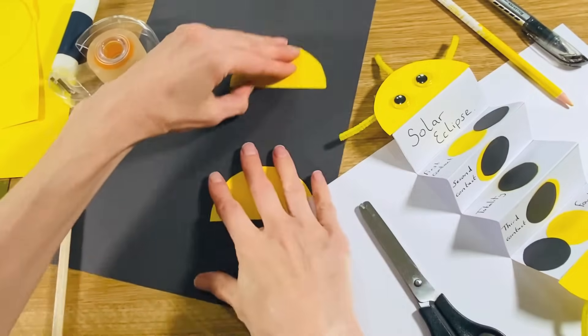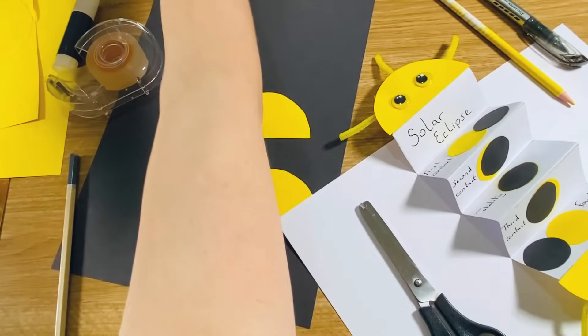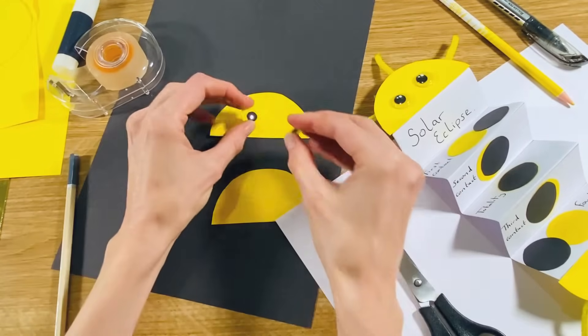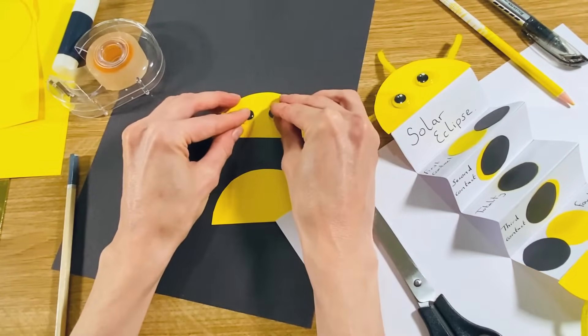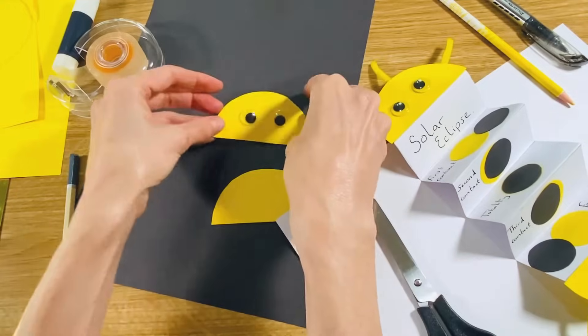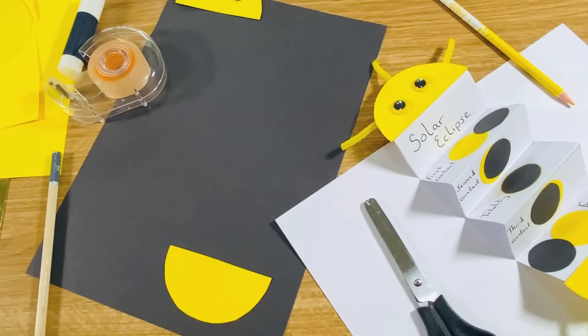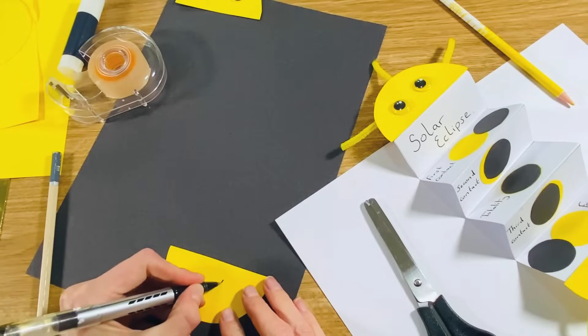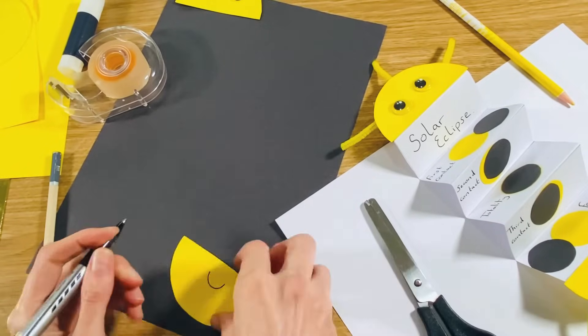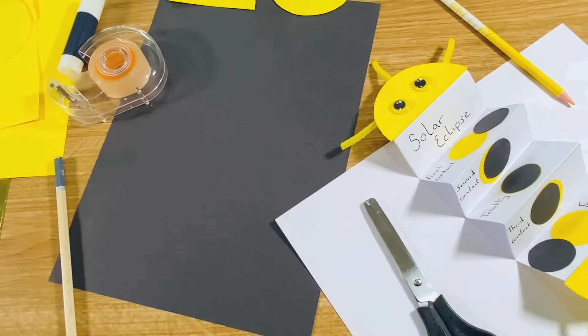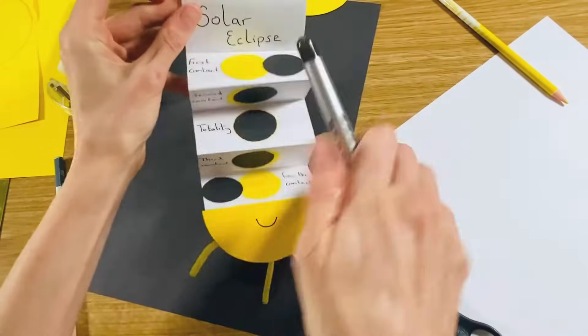And then I've got some pre-glued googly eyes that I'm just going to stick on the top half there, and then pop that to one side to dry. And then on the bottom half I'm just going to add a little smile, a little optional smile, pop that to one side.